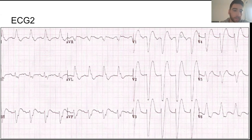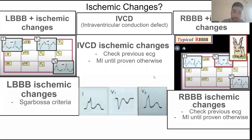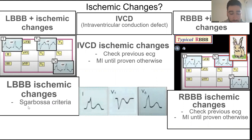What would be concerning for ischemia is the lack of this discordance between the QRS and the T wave. Concordant T waves — where the QRS goes up and the T wave is concordant in lead one, or where the QRS goes down and the T wave is concordant in V1, or concordant in V6 — these are all changes indicative of potential ischemia.